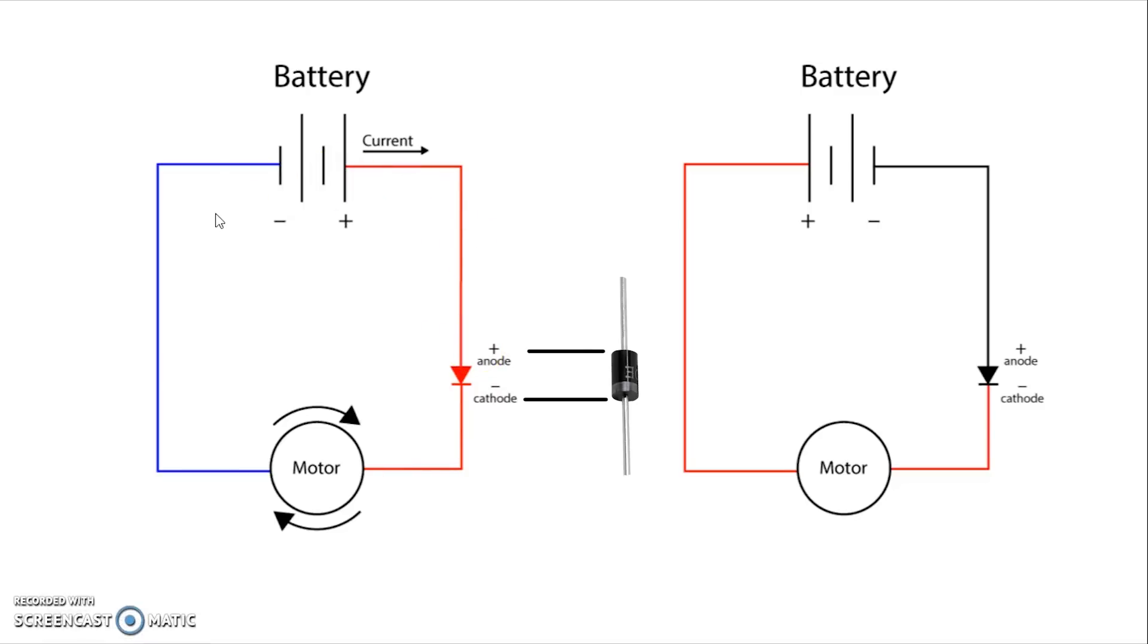And so since electrons are negatively charged the electrons technically flow from the negative side of battery to the positive, but current is measured positively and so it's going to flow in the opposite direction of the electrons. And so the current is going to flow from positive to negative. So you can see in the left hand circuit the motor is rotating because the current is flowing in the correct direction, that diode is letting it go through.